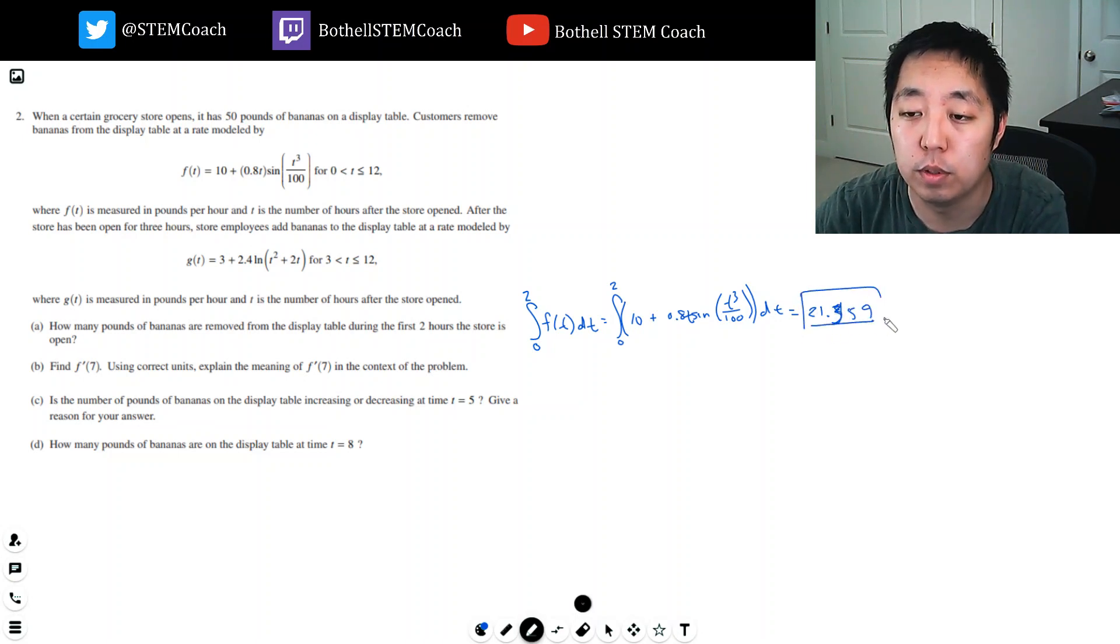Part B: Find the derivative of F at 7 and using correct units explain the meaning of F derivative. So F prime of t is just the derivative of this. The derivative of that is zero. The derivative of this I gotta use product rule. I can put the 0.8 in front, and then I use t times sine of this as the product rule.